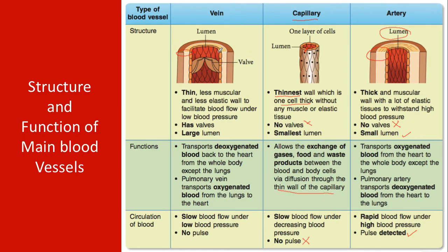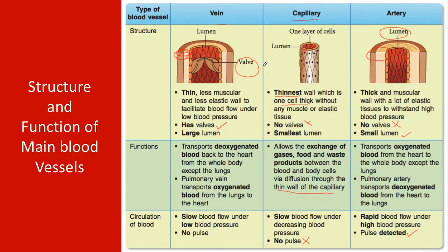When carbon dioxide diffuses back into the blood, the deoxygenated blood is carried by the vein. The vein has a thin, less muscular, and less elastic wall to facilitate blood flow under low blood pressure. Because the blood pressure in veins is much lower, veins require valves to ensure blood flows in one direction — especially in the legs and arms where gravity would otherwise cause backflow.